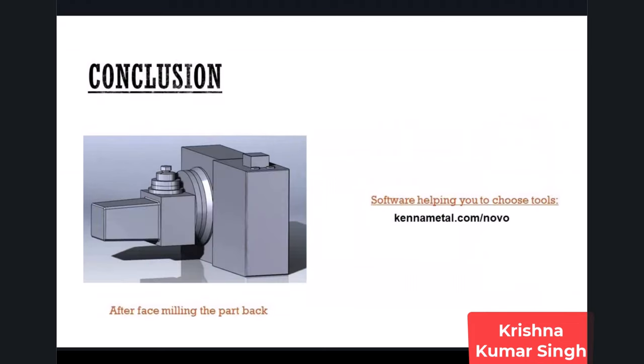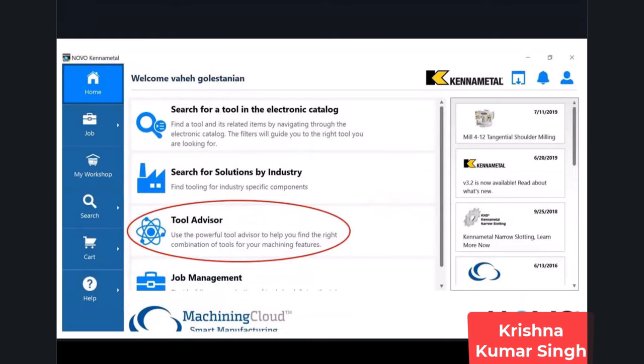For the drill selection, I will use Kennametal's software called NOVO, which helps you find tools for your application. You can download it from kennametal.com. I have downloaded this software and we will use it to select the drill. After opening the software, you will see the main window.